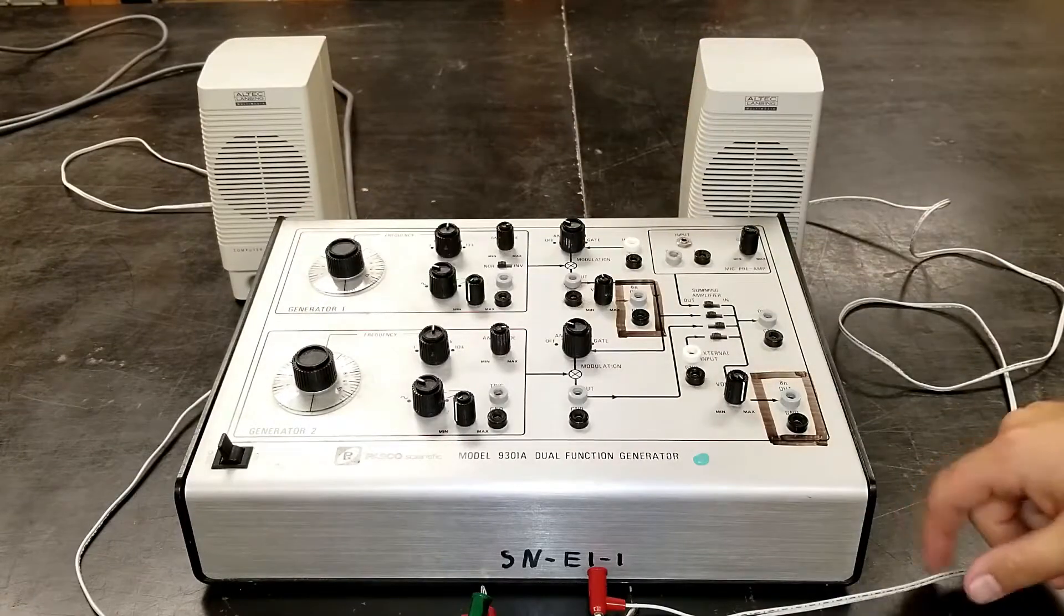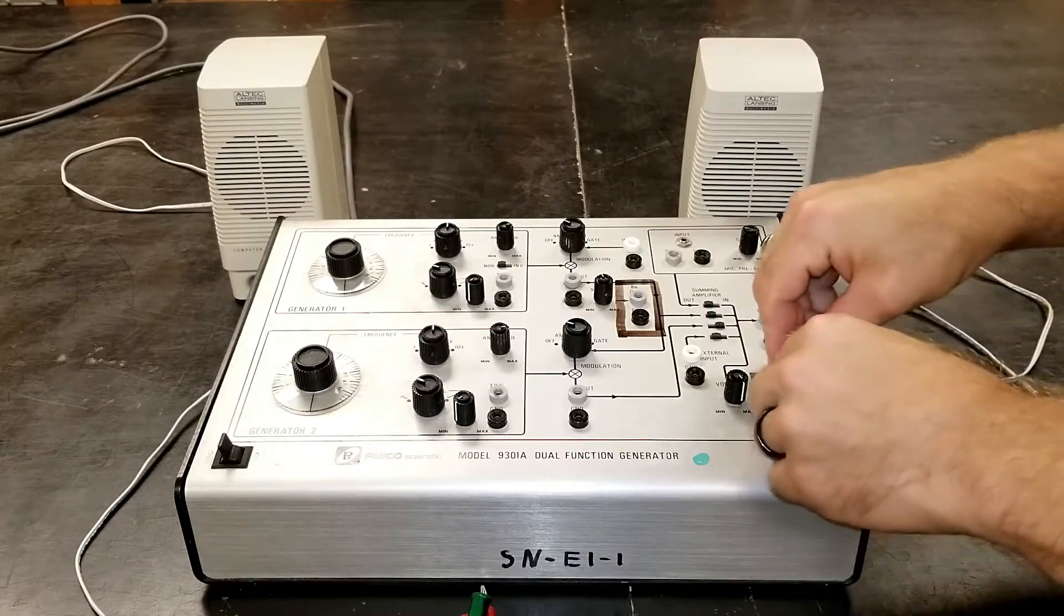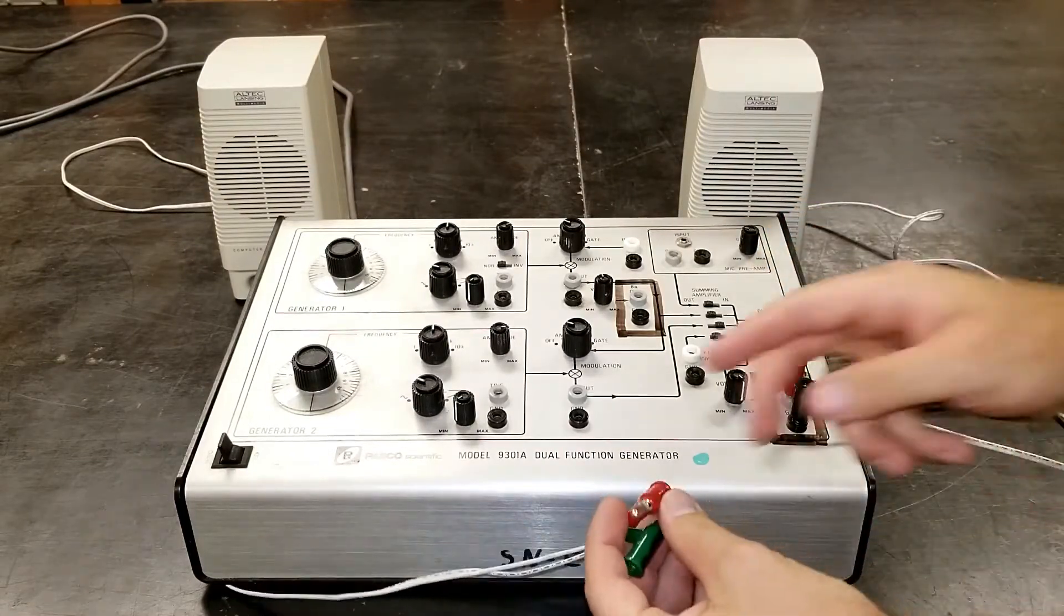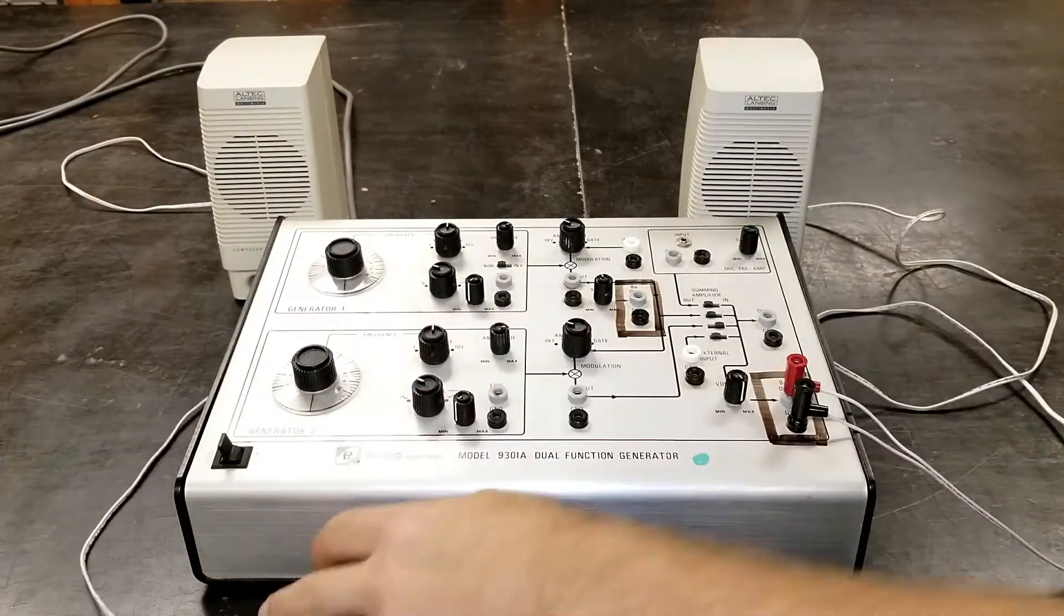When plugging in your speakers, the red banana clip always goes on top or in this gray slot, while your black or green one goes on the bottom. Of course, there are instances where you do want to swap things. That's just a general rule of thumb.